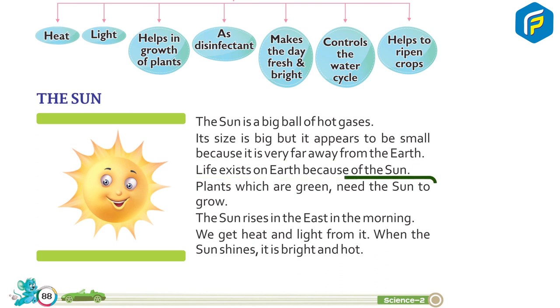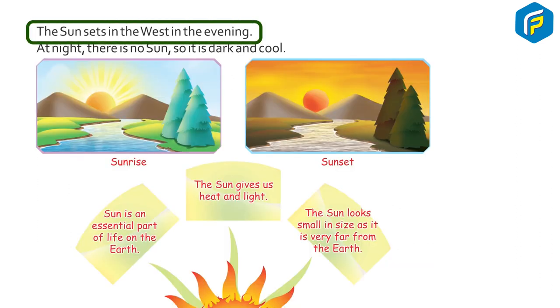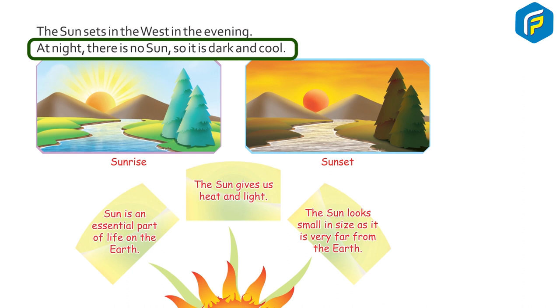Plants which are green need the Sun to grow. The Sun rises in the east in the morning. We get heat and light from it. When the Sun shines, it is bright and hot. The Sun sets in the west in the evening. At night there is no Sun, so it is dark and cool.